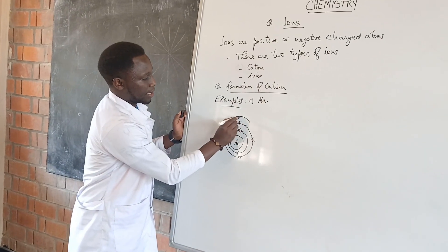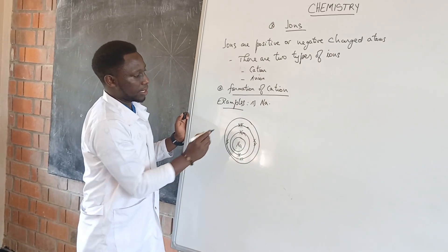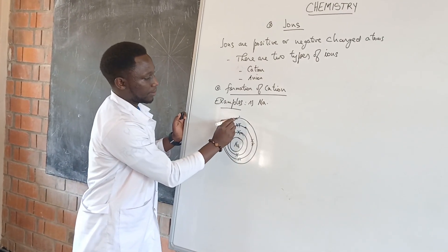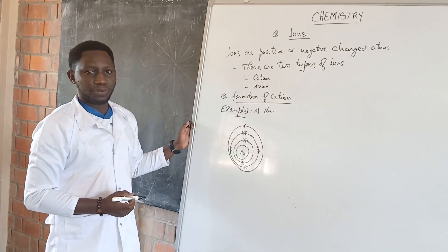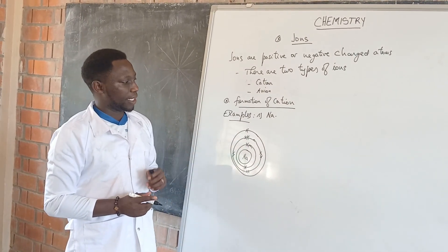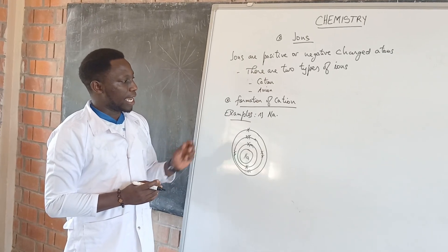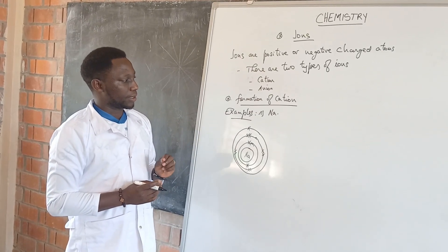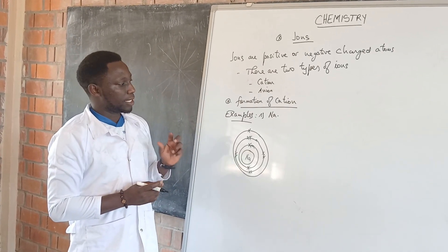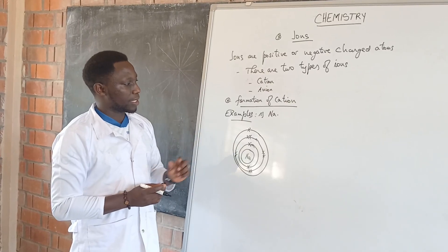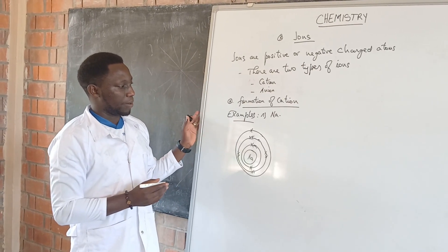The last shell contains one. This is the electronic configuration of sodium with 11 electrons. And then, as a cation, it has a positive charge. This means it loses one electron in order to be stable.